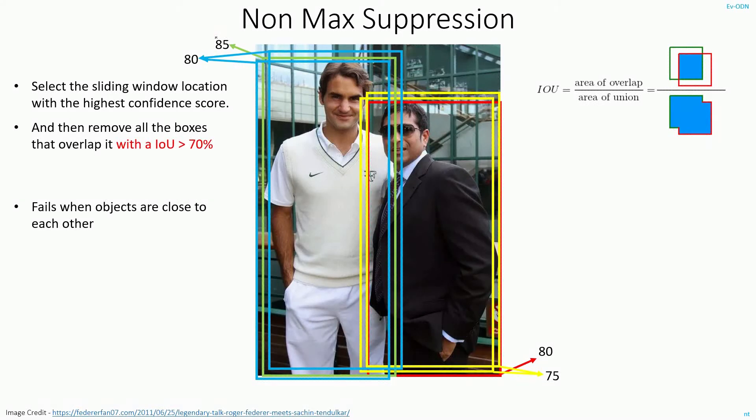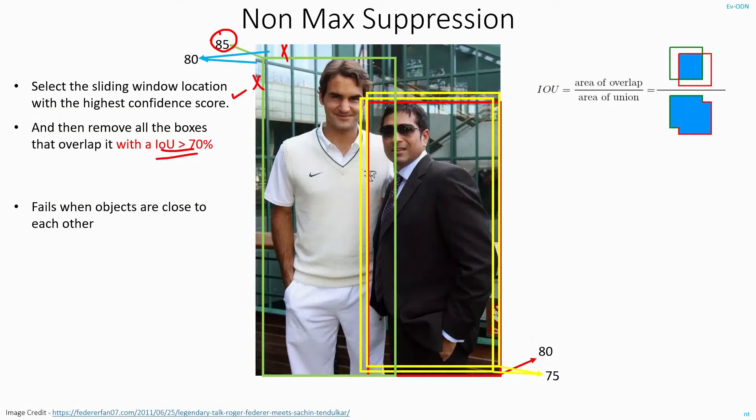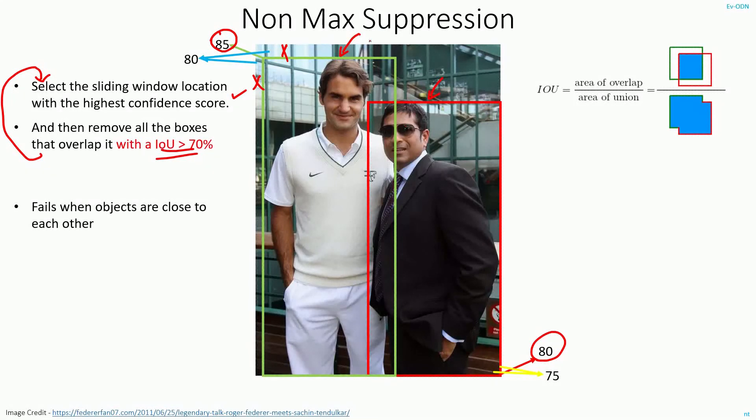Now, what will happen, I will first select this green box with the 85% confidence score and I will remove these two blue boxes, which have a high IOU overlap. Next, I have to rerun this process until all the boxes are done. That is, now I will select this red box and remove the yellow ones. So, this way, I will be able to remove all the duplicate bounding boxes and retain only the correct ones.